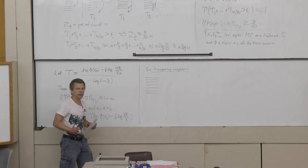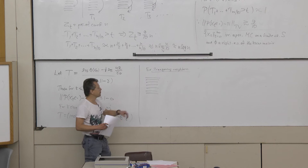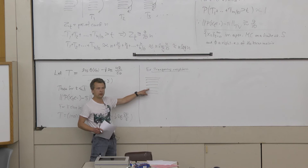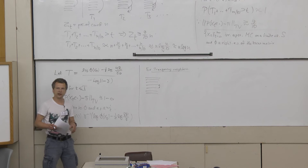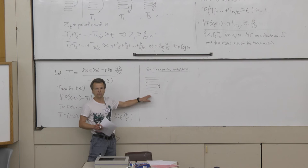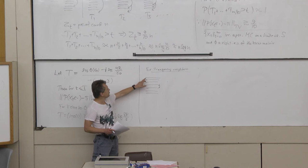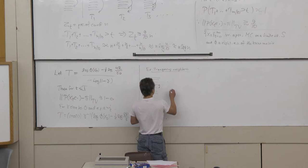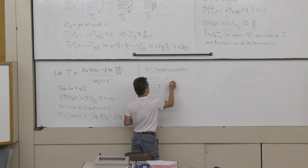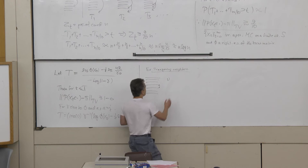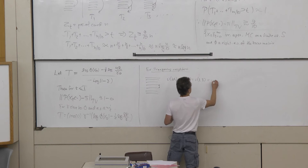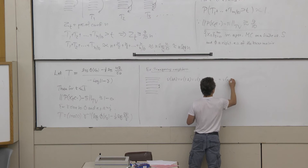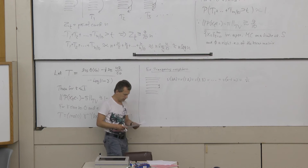In the neighbor transposition shuffle, you pick a position at random and swap that card with the next card. For convenience, we use a circular deck convention, which also assigns probability 1/N to transposing the top card with the bottom card. So the measure nu on S_N for one transposition has nu(id) = nu(1,2) = nu(2,3) = ... = nu(N-1,N), all equal to 1/N.